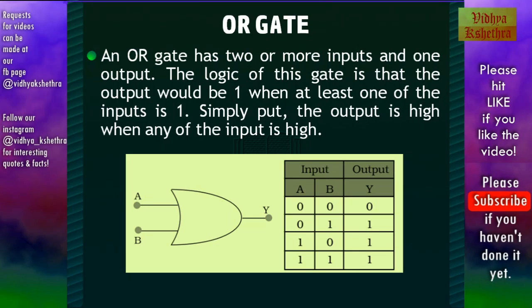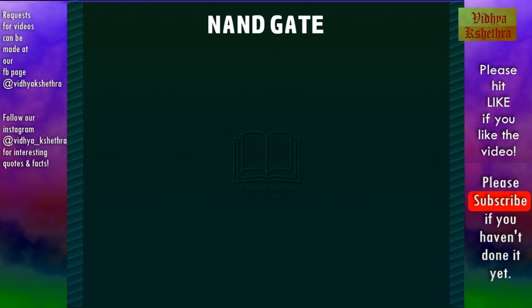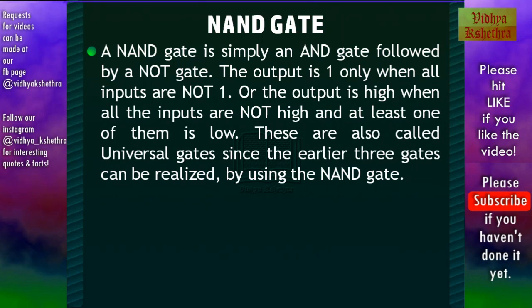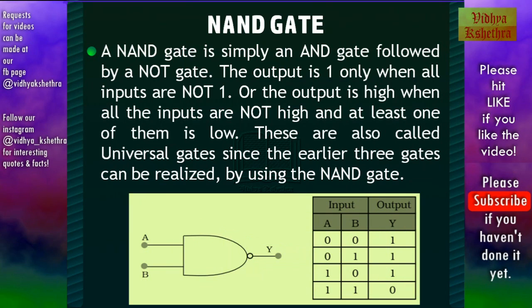NOT, AND, and OR gates are the basic gates. A NAND gate is formed by the combination of a NOT gate and an AND gate. The output is 1 only when all the inputs are NOT 1, or the output is high when at least one of the inputs is low. These are also called universal gates since the earlier 3 basic gates can be realized by using the NAND gate. The symbol and the truth table are shown in this figure — we can see that an inverter comes after an AND gate.